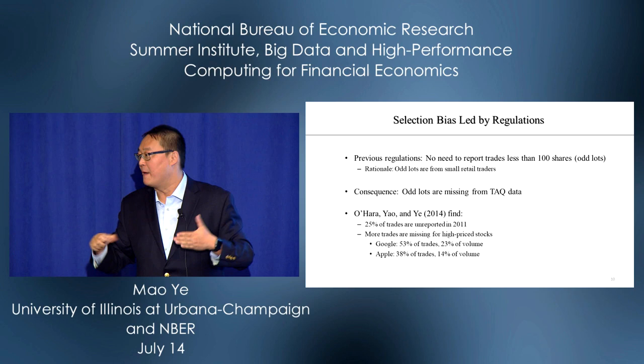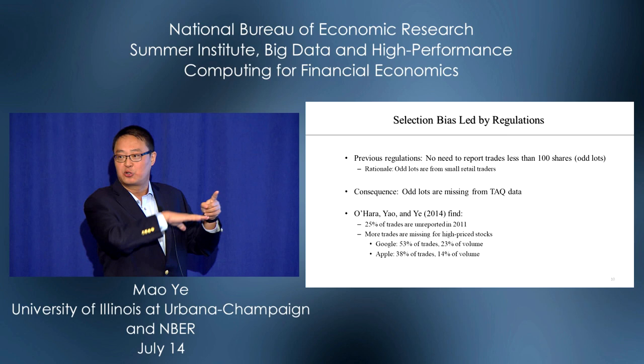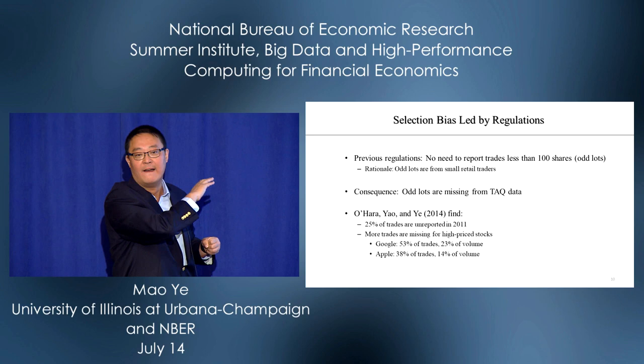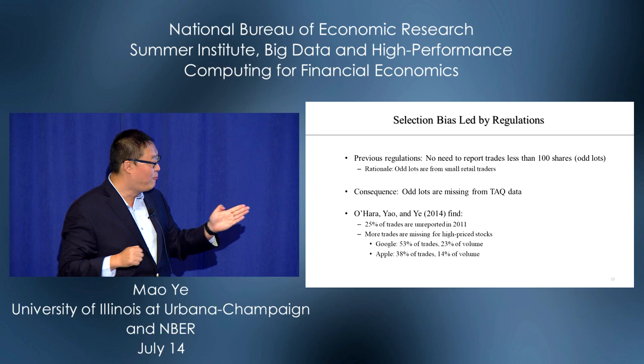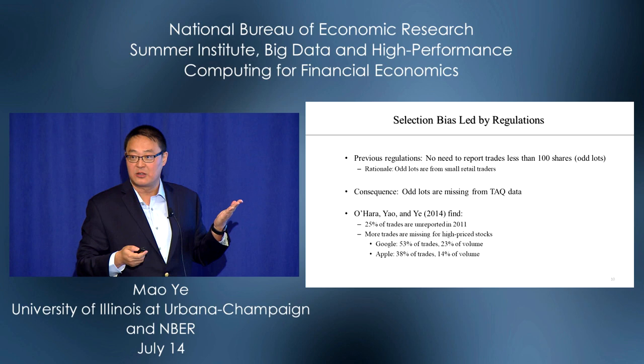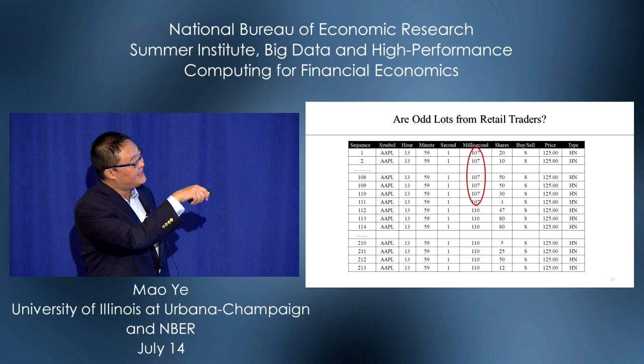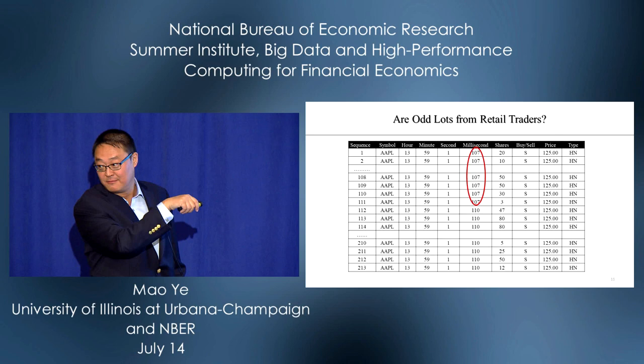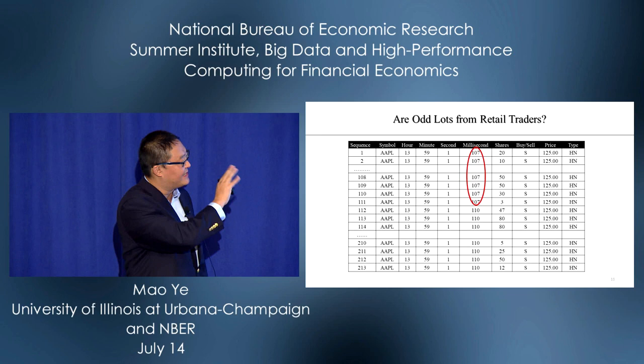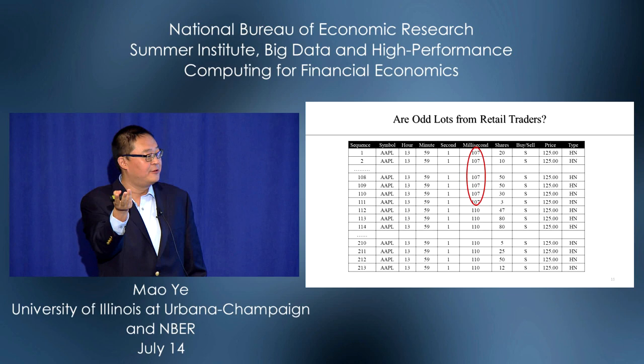The reasoning was that small trades come from small traders — like your neighbor buying one share of Disney for his kid. But when we compare the large dataset with the larger dataset, we realize these small trades are actually missing. Before 2013, 25% of observations are truncated. For high-price stocks it's more — for Google, 53% are truncated; for Apple, 38%. But can retail traders really trade 111 times within one millisecond? No.